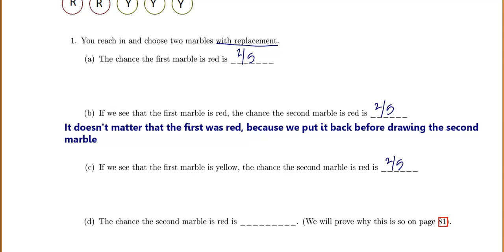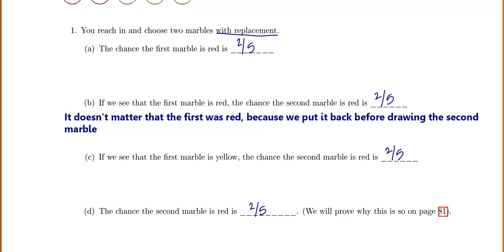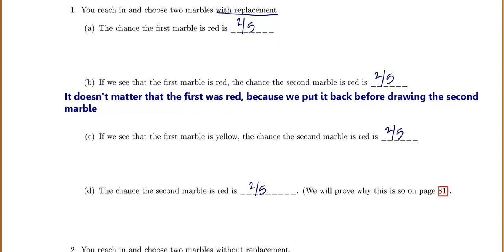The chance that the second marble is red with no information about the first marble is also two fifths. Since we're drawing with replacement, nothing about the first draw changes the probability of the second draw.